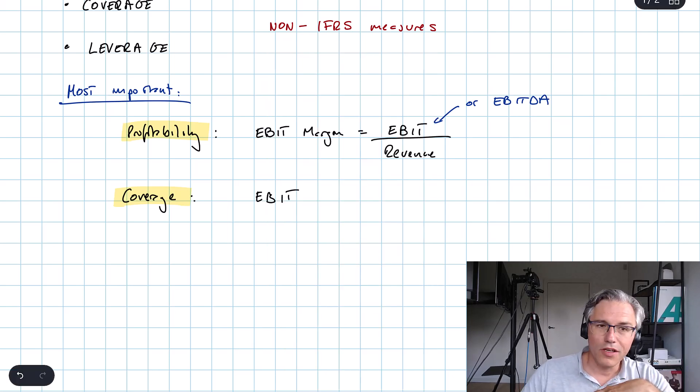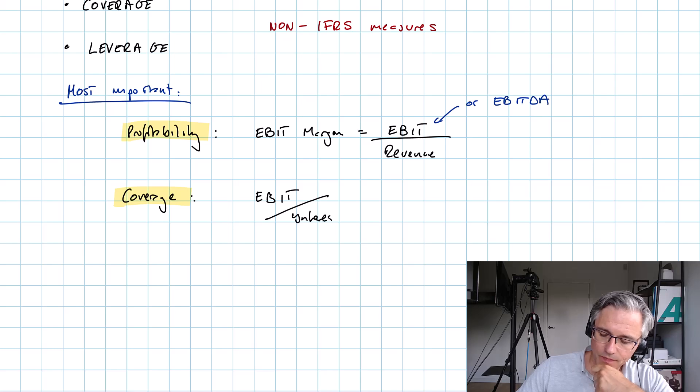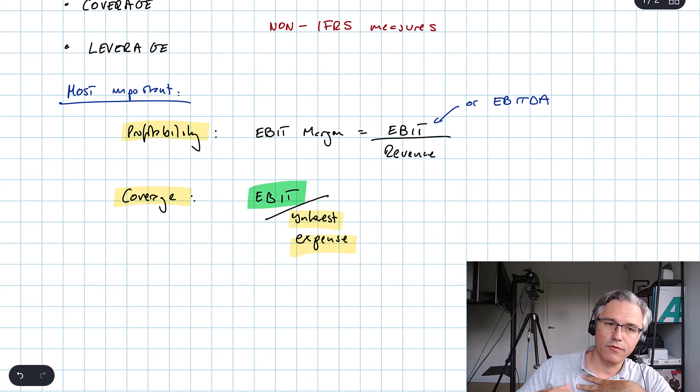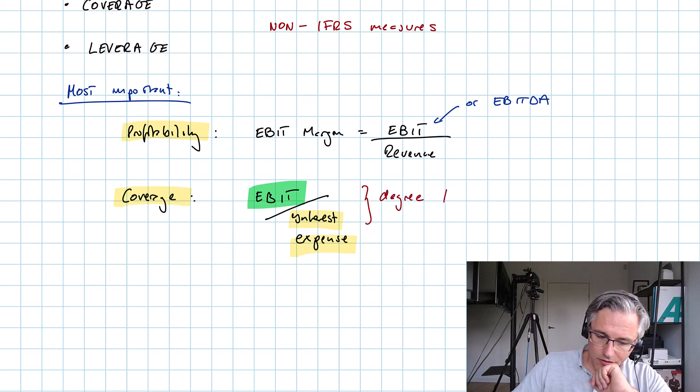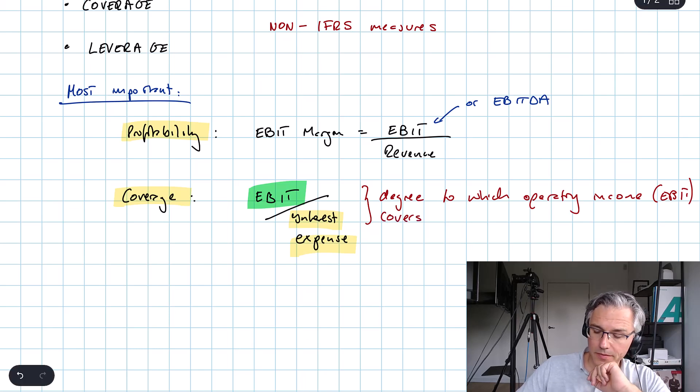To what extent is interest expense covered by our earnings before interest and taxes? Obviously EBIT is calculated before the deduction of interest expense, so this is logically sensible to measure things this way. The ratio measures the degree to which operating income, that's EBIT, literally covers our interest payments or interest expenses.